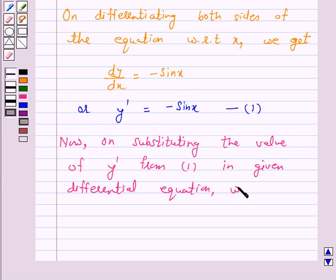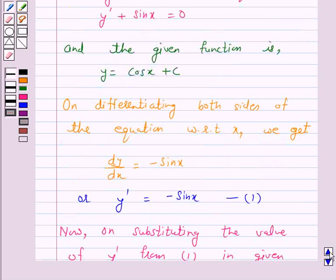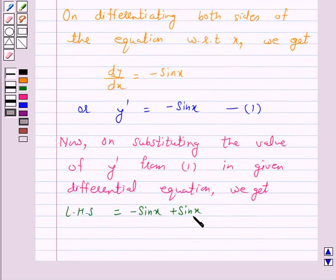We get the left hand side as -sin x + sin x, because the given differential equation is y' + sin x = 0, and y' is -sin x. So the left hand side of the given differential equation becomes -sin x + sin x, and this is equal to 0, which is our right hand side.